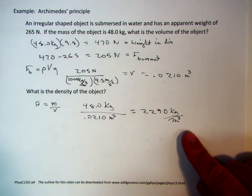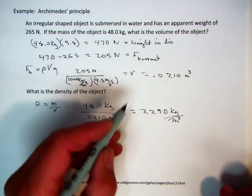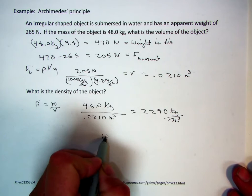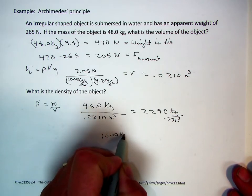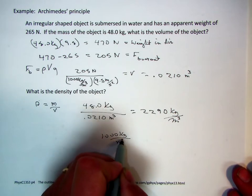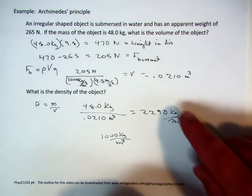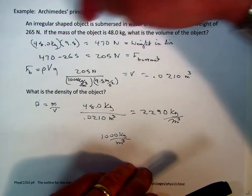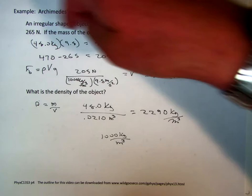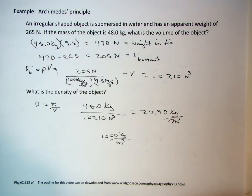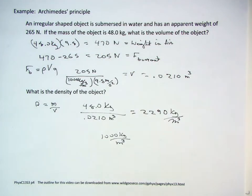So, does it make sense that it would float or would it sink? Well, the density of water is 1,000 kilograms per meter cubed. This has a density of 2,290 kilograms per meter cubed. So, you'd expect it to sink. But it makes sense why the upward force is about half of what the weight force of the object is anyway.